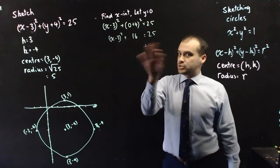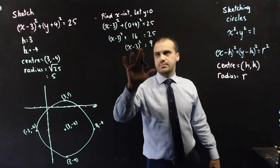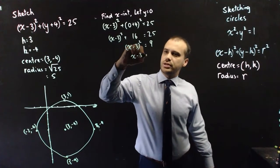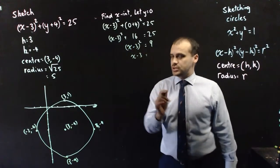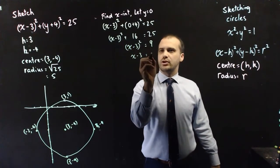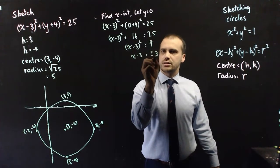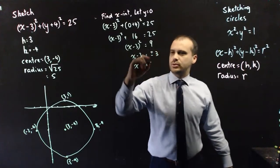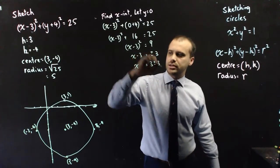I can subtract 16 from both sides, which leaves me with x minus 3 squared equals 9. I can square root both sides, and this is where my 2 answers are going to appear. The square root of 9 is plus or minus 3, and then I get x equals 3 plus or minus 3.